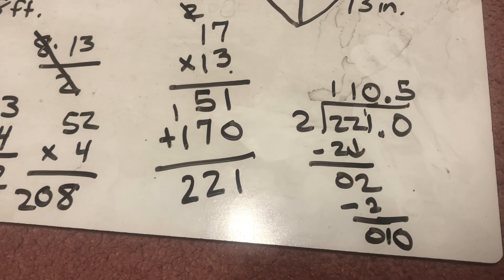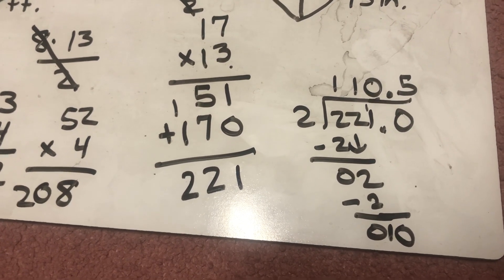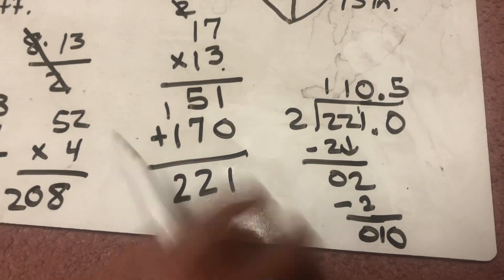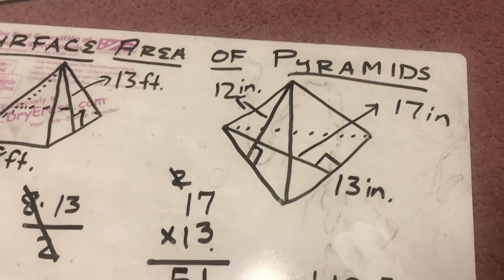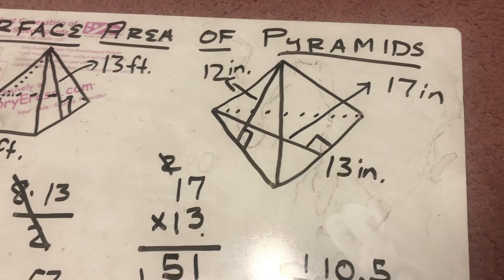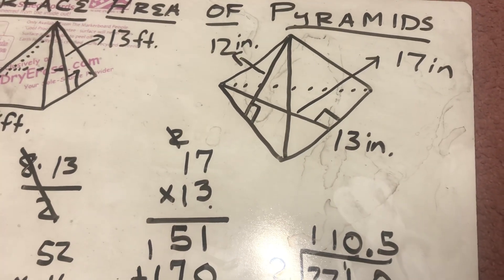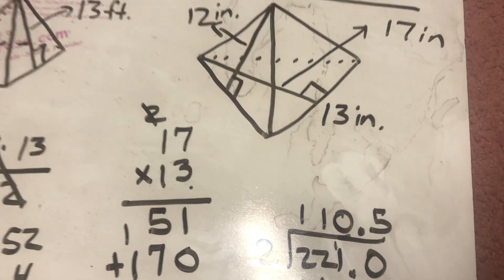So, 1 of the triangles equals 110.5. So, now I have to take that 110.5, though, because I have 3 triangles. This is a triangular pyramid. So, now there's only 3 triangle lateral faces.